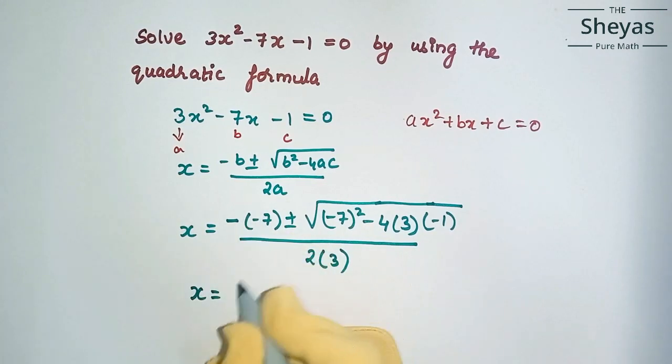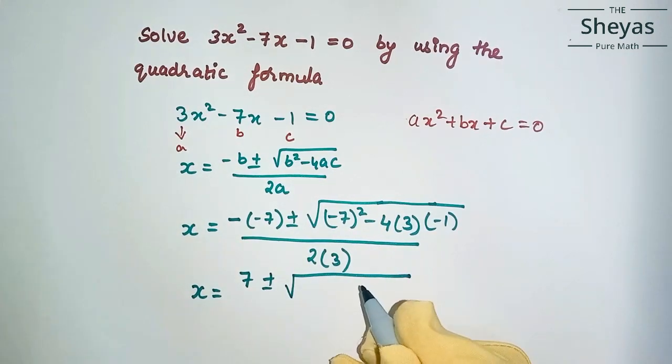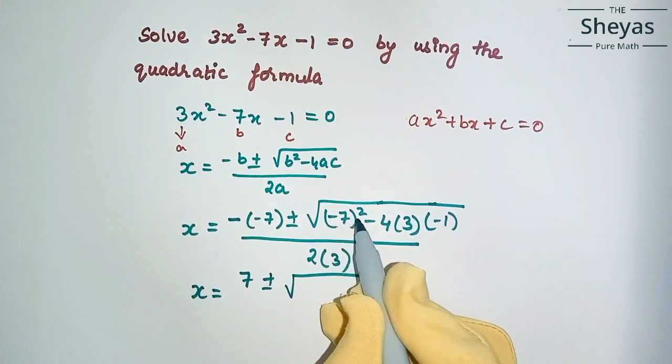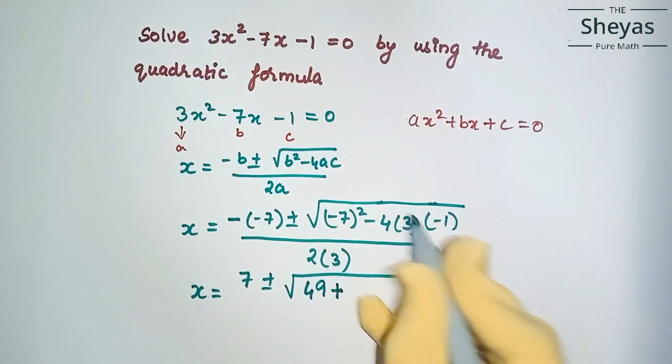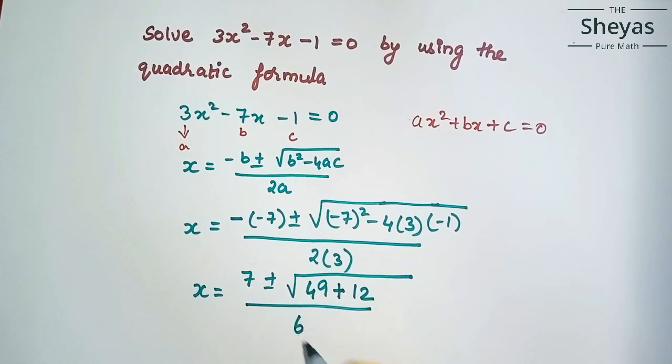x equals minus of minus 7 is 7 plus or minus square root of minus 7 squared is 49. Minus of minus is plus 4, 3 times 4 is 12, 12 into 1 is 12, by 6.